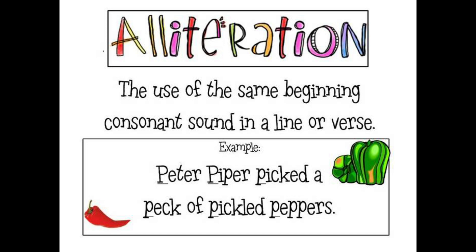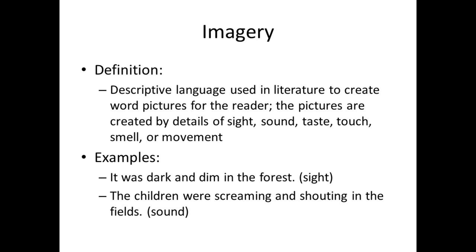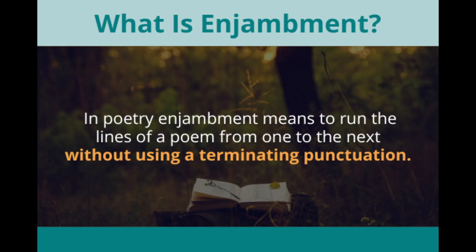Third is alliteration, which means repetition of the initial sound. For example, 'has given my heart' — here the 'h' sound is repetitive. Fourth is imagery — the whole poem is an example of this.